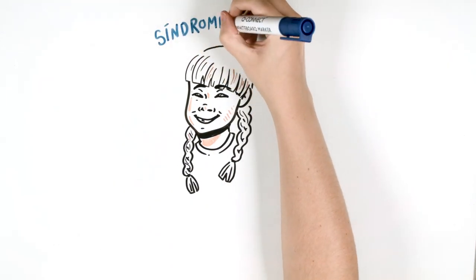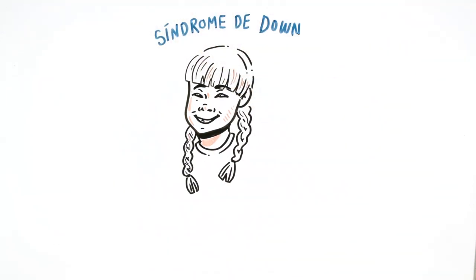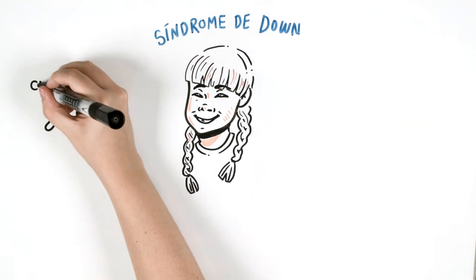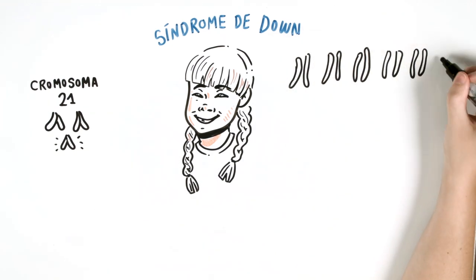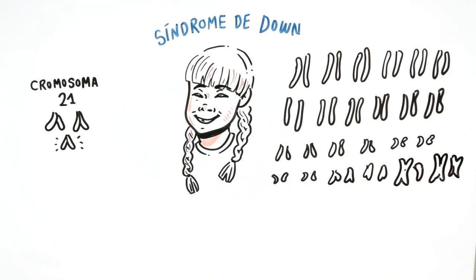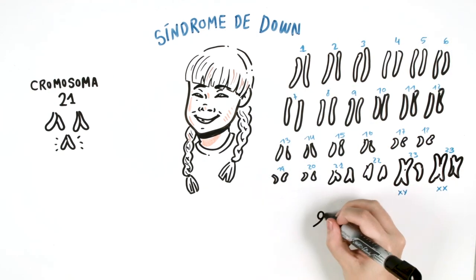The Down syndrome. Let's start with something simple. Down syndrome is a genetic disorder that is caused by the total or partial tripling of chromosome 21. This is why it is also called trisomy 21. That means people with Down syndrome have 47 chromosomes instead of 46.